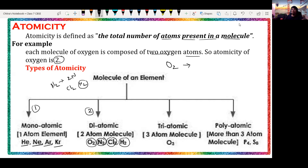Next we have triatomic molecules — those molecules which have three atoms in their molecule are called triatomic. Ozone is the best example of a triatomic molecule. Then we have polyatomic molecules — those having three or more than three atoms in their molecule are called polyatomic molecules.